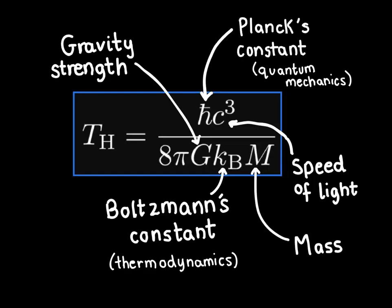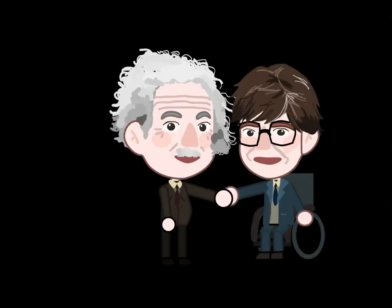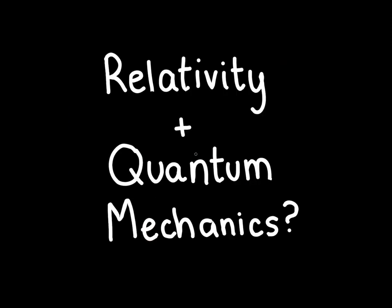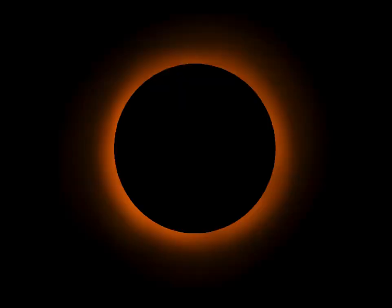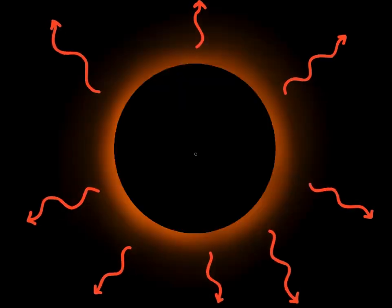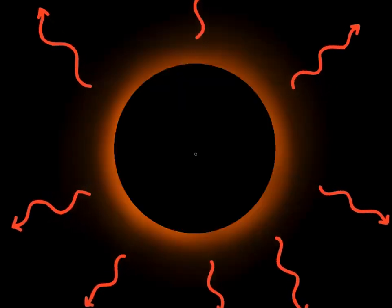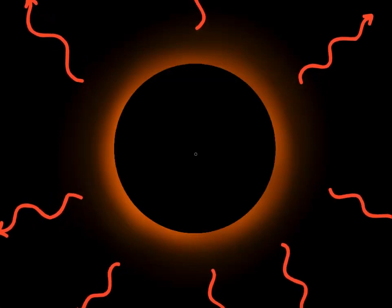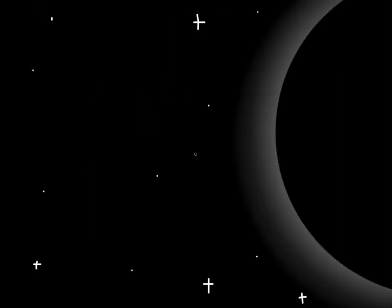It was a prediction calculated using both of the century's greatest theories — classical general relativity and the newer quantum mechanics. If these ideas were both correct, it meant that black holes must radiate like hot bodies. This theorized radiation was later dubbed Hawking radiation.